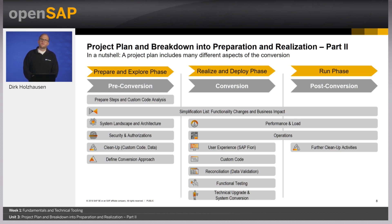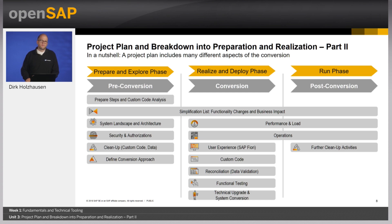The conversion to S4HANA includes many different aspects that need to be considered in the project phases. Aspects that need to be executed before the conversion starts must be considered in the prepare and explore phase. These include: custom code analysis, assessing the impact of the Simplification List, defining and preparing the system landscape and architecture (including the architecture required for Fiori), security and authorization, cleanup and archiving activities for custom code and data, and defining the appropriate conversion approach including the number of conversion cycles.